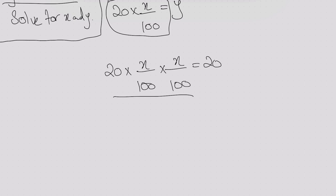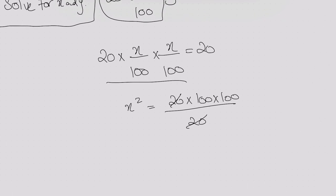If I resolve this equation, this will become x square equals 20 multiplied by 100 multiplied by 100 over 20. This 20 gets cut down, leaving 100 multiplied by 100, which is basically 100 square.